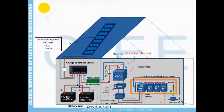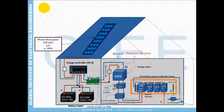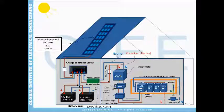The battery bank connection is shown here. The power inverter converts DC to AC, with a rated power of 500 watts and an efficiency of 90 percent. As we know, this depends on our load, and we will talk about this later.